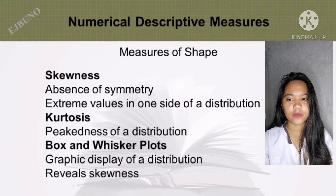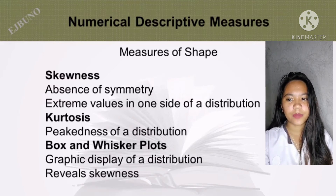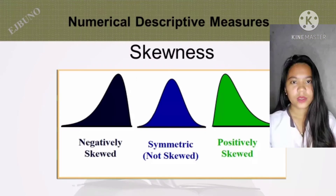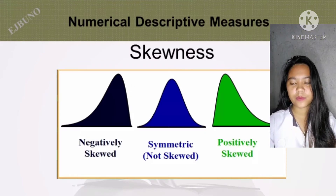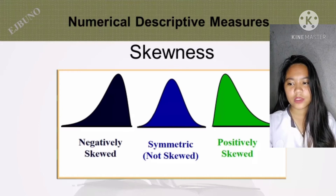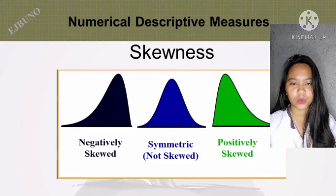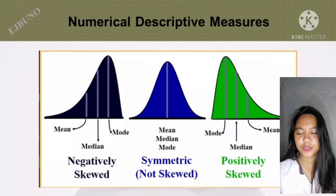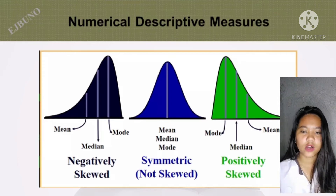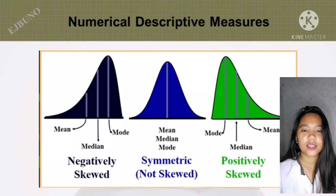Shape. Skewness refers to the absence of symmetry and extreme values on one side of the distribution. Kurtosis refers to the peakedness of a distribution. Box and whisker plots provide a graphic display of the distribution and reveal skewness. The first picture shows a negatively skewed distribution, the next is symmetric (not skewed), and the green shows a positively skewed distribution.